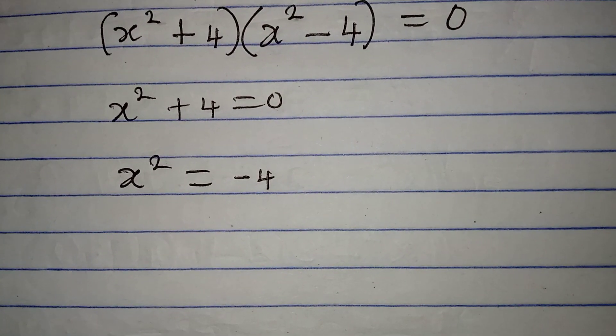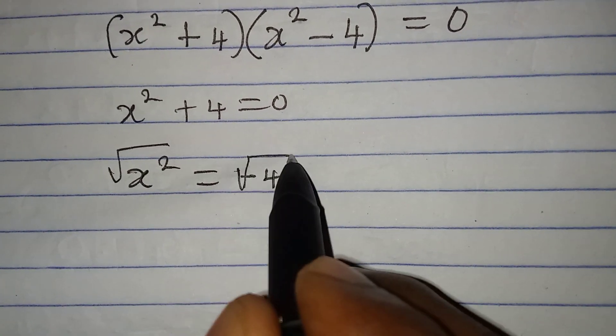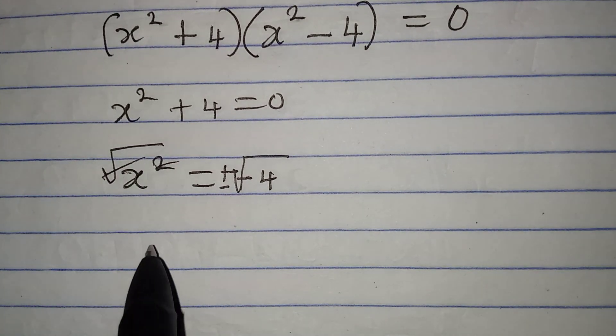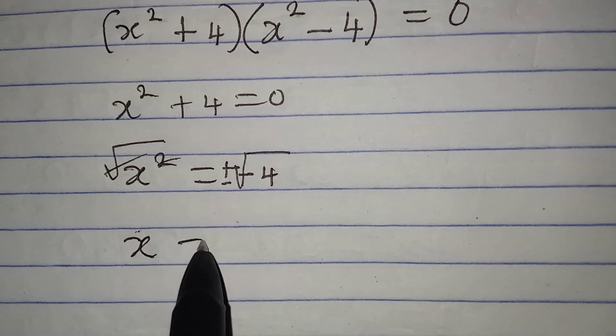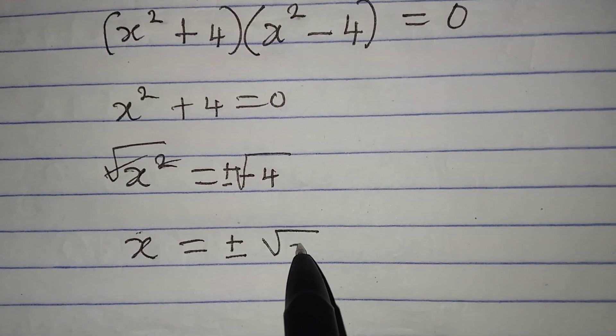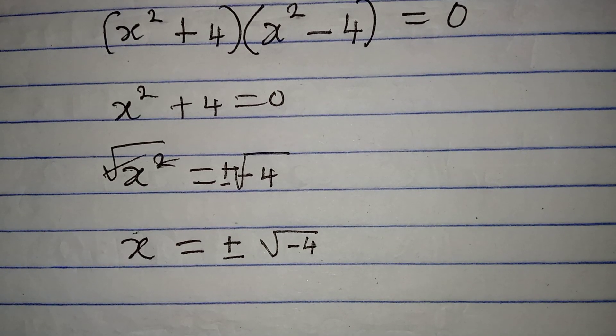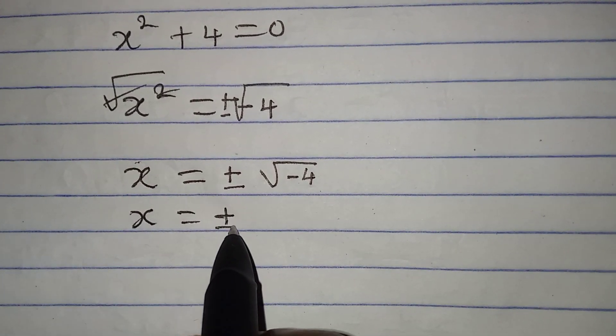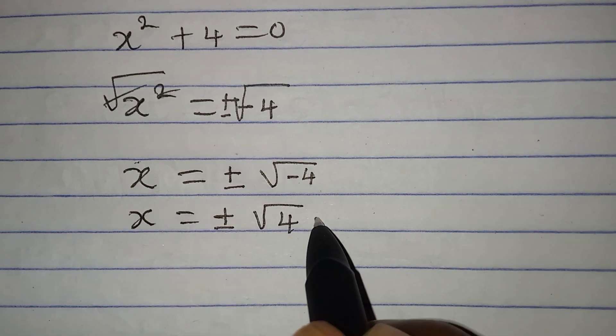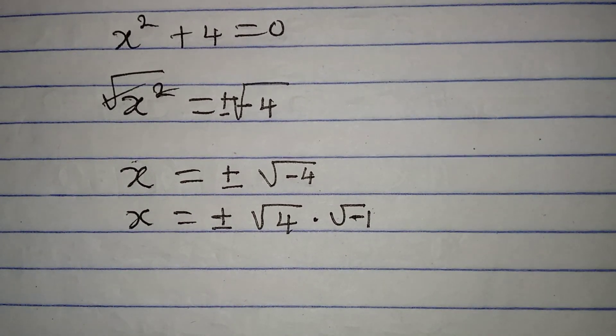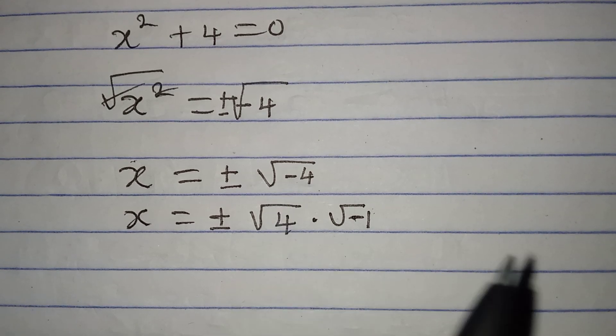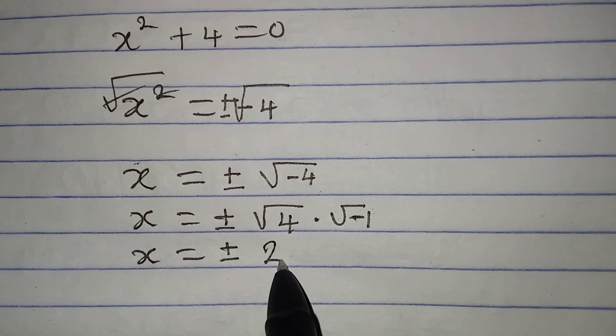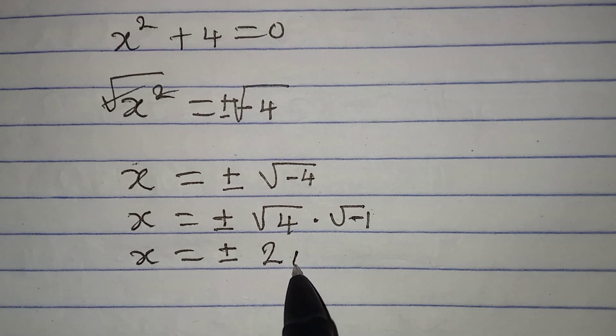And then what if I take the square root of both sides? Then I have positive or negative over here. Square root and square will cancel. Now I'm going to have x to be equal to positive or negative square root of negative 4. But finding square root of negative 4 will lead us to complex number. This is the same thing as x equal to positive or negative square root of 4 multiplied by square root of negative 1. What I'm trying to do is to pick out this negative from here. So that if you continue, x will be equal to positive or negative square root of 4 is now 2. Then square root of negative 1 will give you what we call i.